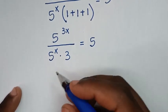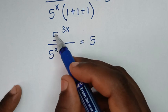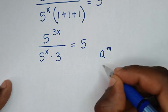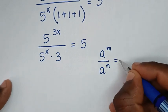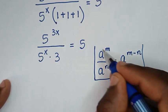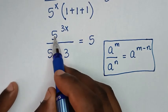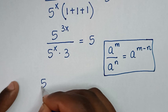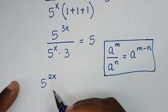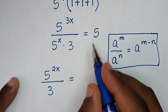In the next step, 5 power of x plus x plus x is 5 power of 3x, over 5 power of x, times 3, equals 5. Now 5 power of 3x divided by 5 power of x — this is division of exponents with the same base of 5, so we apply the exponential rule: a power of m over a power of n equals a power of m minus n. This gives us 5 power of 3x minus x, which is 5 power of 2x, over 3, equals 5.